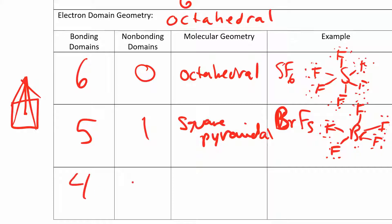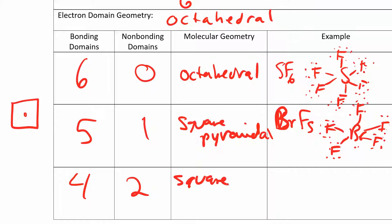With four bonding and two non-bonding domains, when you take off the next one, you want those lone pair electrons on the central atom to be as far away from each other as possible. So you're going to remove that top bond, and now you basically get something that looks like a square planar. It's planar — it's all in one plane — and it's square, so it's square planar.